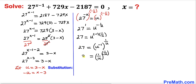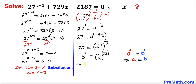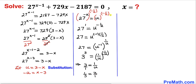We now have 3 to the power 3 equals (1 over u) to the power 1 over u. By comparison, we can write 3 equals 1 over u. Flipping both sides gives us 1 over 3 equals u, so therefore u equals 1 divided by 3.